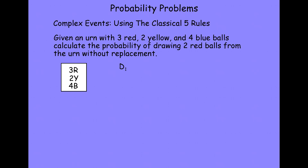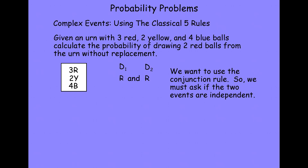We've got one draw — in order for our event to occur, that draw has to be red. We've got another draw — in order for that event to occur, that draw has to be red. So our event is going to be a conjunctive event. Since it's a conjunctive event, we want to ask: are these events independent of each other? The key is the phrase 'without replacement.' We reach in, grab a ball — it has to be red — then set it aside. From the remaining balls we draw again, and that ball also has to be red. So our two draws aren't independent; the probability of the second draw is influenced by the first.